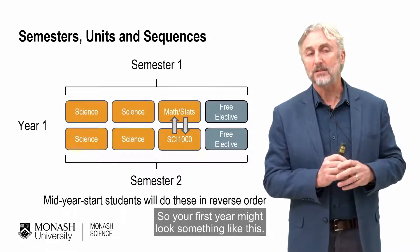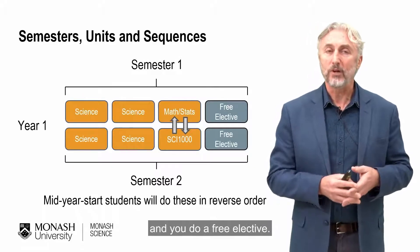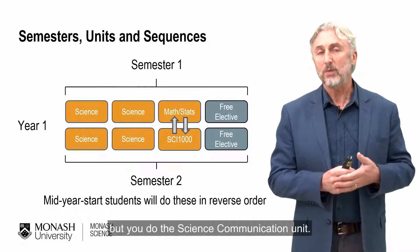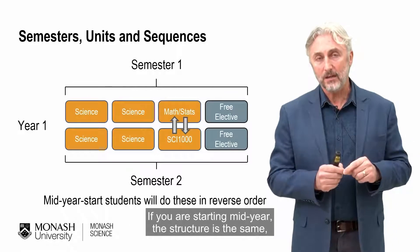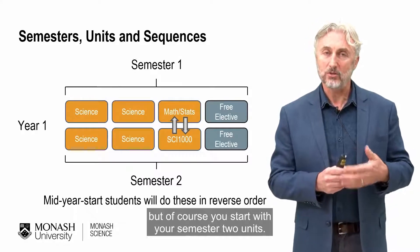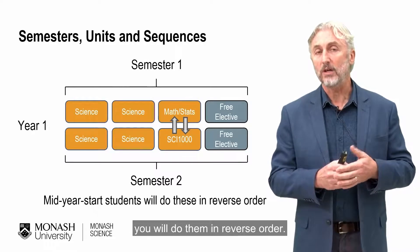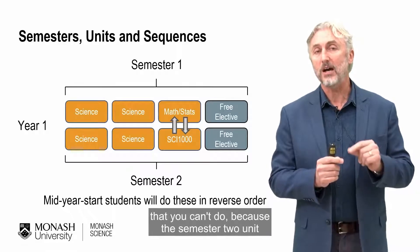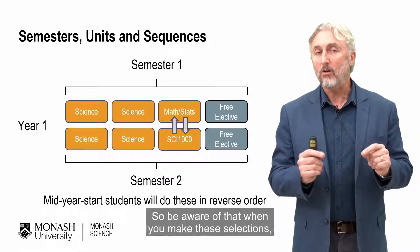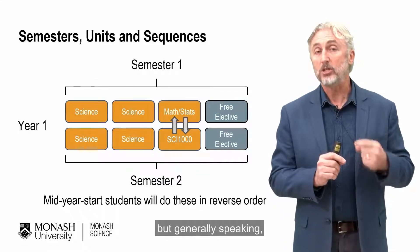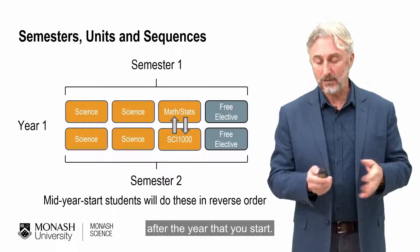Your first year might look something like this: in semester one, you complete two science units, the mathematics and statistics unit, and a free elective. In semester two you do the same but with the science communication unit — though remember those can be done in either order. If you're starting mid-year, the structure is the same but you start with semester two units, meaning you'll do sequences in reverse order. Be aware that some sequences have the semester one unit as a prerequisite for the semester two unit, which may limit your choice slightly. Generally, you'll finish your first year requirements in semester one of the following year.